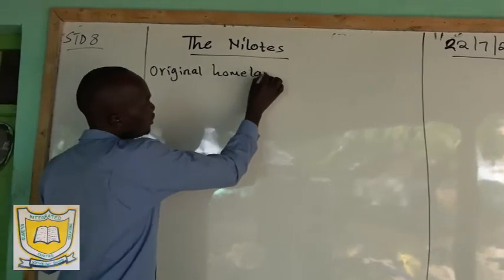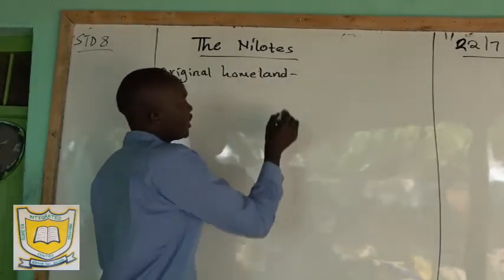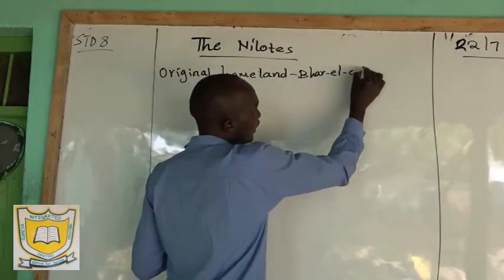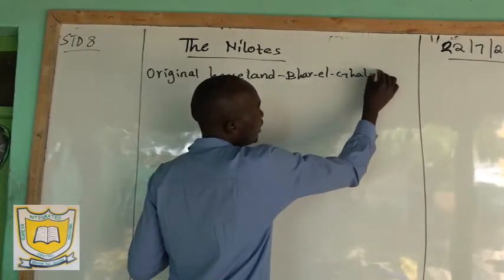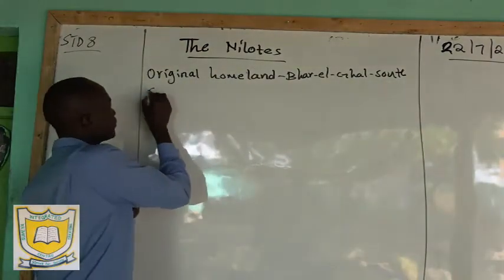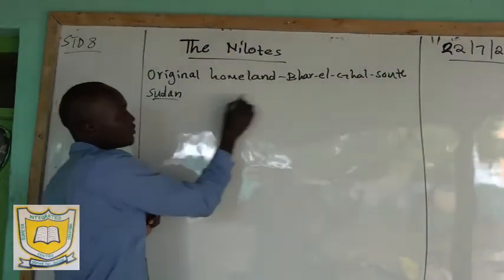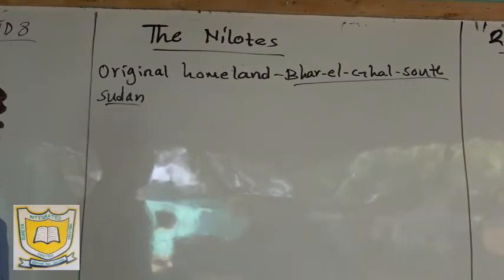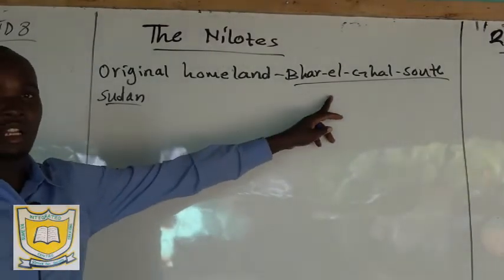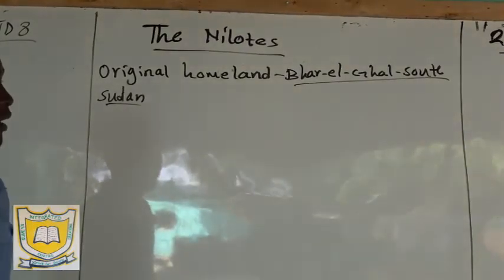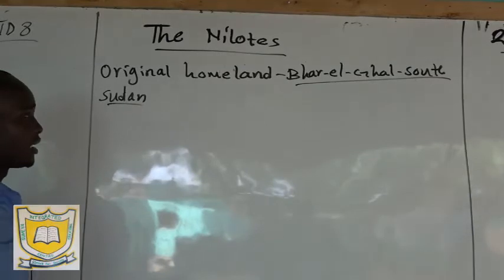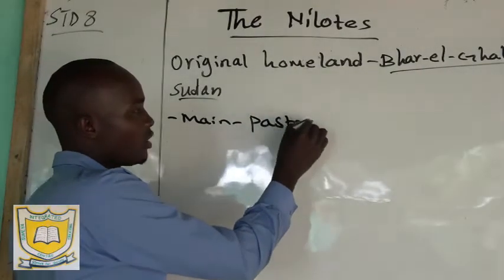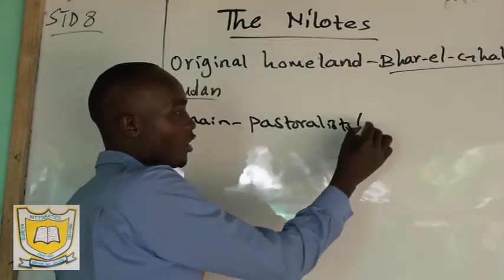The original homeland of the Nilots — they came from a place called Bahr el Ghazal in South Sudan. That is where they originated from. Their main economic activity was pastoralism — they were pastoralists, or livestock keepers.